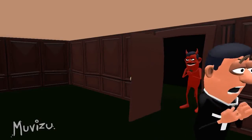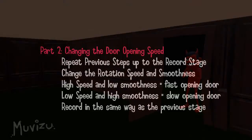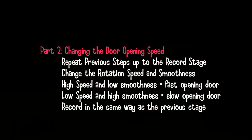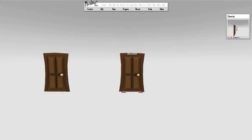The next thing we're going to look at is changing the door's opening speed. You repeat the previous steps up to the record stage, then change the rotation speed and smoothness. High speed and low smoothness gives a fast-opening door; low speed and high smoothness gives a slow-opening door. Then record it the same way as previously.